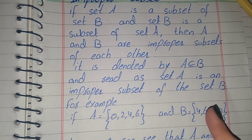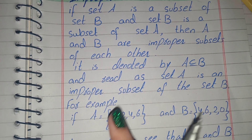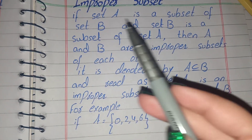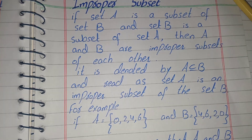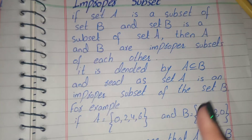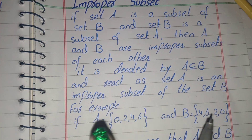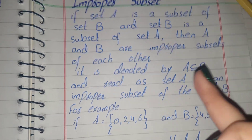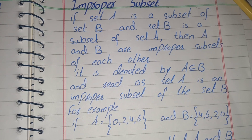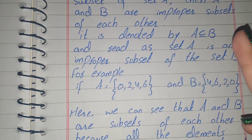All the elements of set A are elements of set B and all the elements of set B are also elements of set A. According to the definition, if set A is a subset of set B and set B is a subset of set A, then A and B are improper subsets of each other. It is denoted as A improper subset B, and read as: set A is an improper subset of set B.